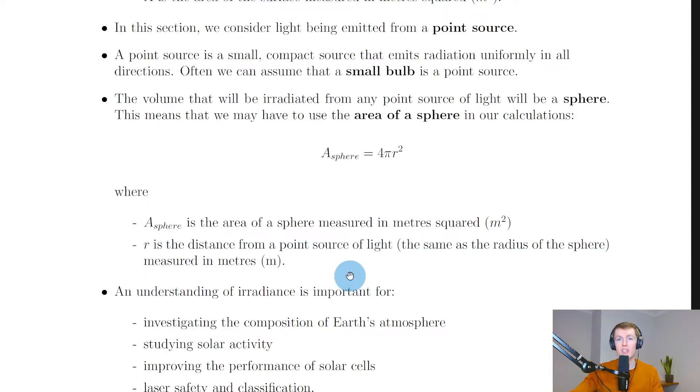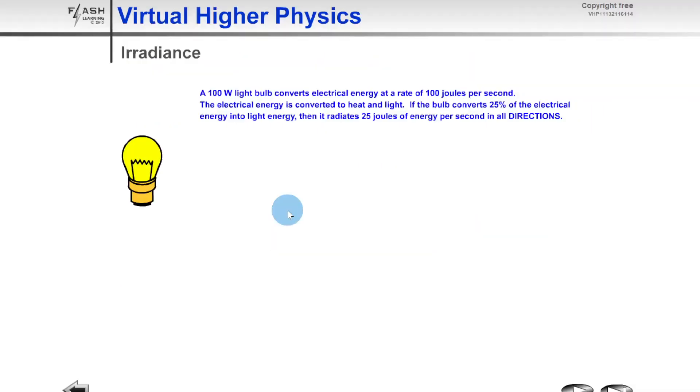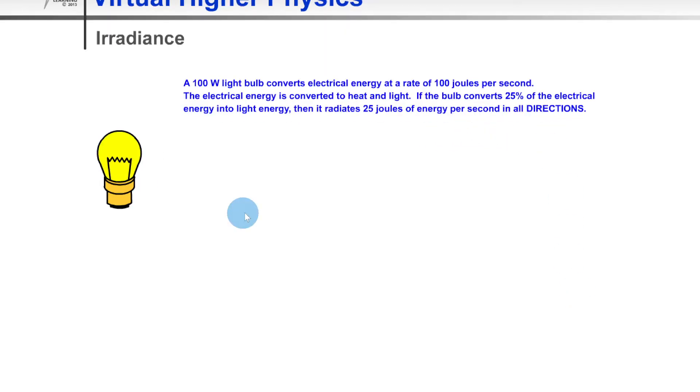Now just to show you a quick simulation to help you visualize this idea of the sphere. If you look here, it says that a 100 watt light bulb converts electrical energy at a rate of 100 joules per second. The electrical energy is converted to heat and light. If the bulb converts 25% of the electrical energy into light energy, then it radiates 25 joules of energy per second in all directions.